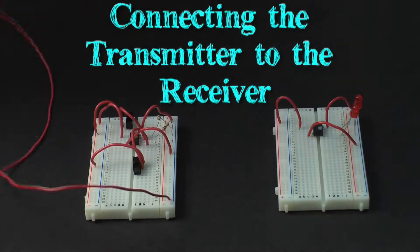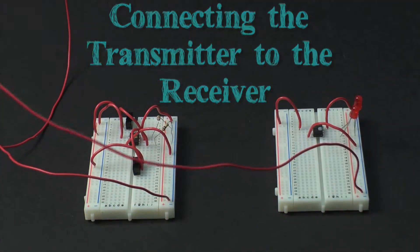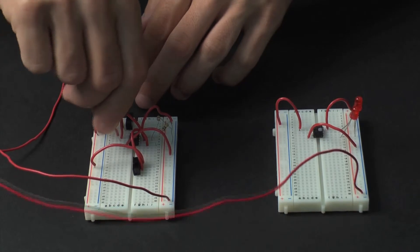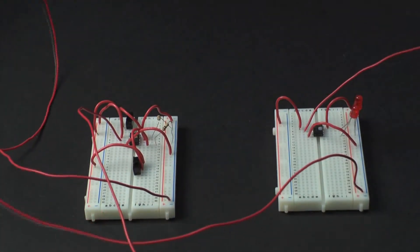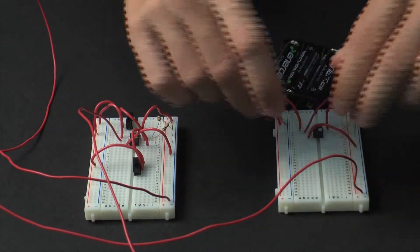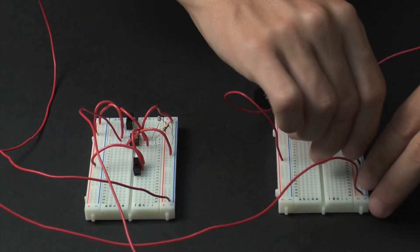Next, connect the transmitter and the receiver with the two long wires. Then connect the two battery packs to the transmitter and the receiver.